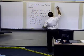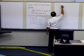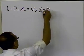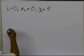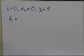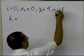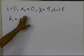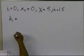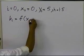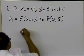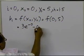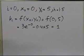Setting i equal to 0: x0 equals 0 and y0 equals 5, from the given initial condition. We want to calculate y at x equal to 1.5 (one step ahead). k1 is the function f(x0, y0) evaluated at x equals 0, y equals 5, giving 3e to the power minus 0, minus 0.4 times 5, which equals 1. So k1 equals 1.